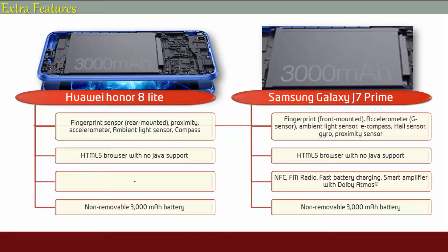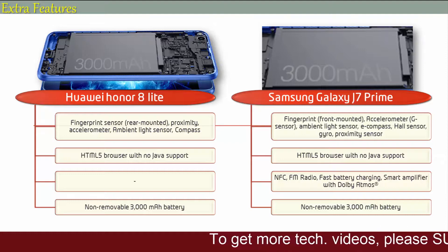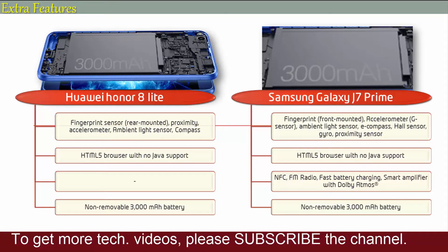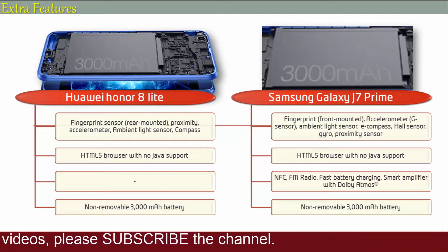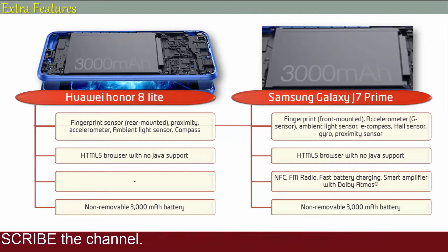Huawei has placed the fingerprint scanner on the rear side of the phone. It also has an ambient light sensor, proximity sensor, compass and accelerometer. This phone comes with a non-removable 3000 mAh battery. Whereas Nokia has placed the fingerprint scanner on the front side of the phone. The Nokia 6 also features NFC, FM radio, micro USB 2.0, USB OTG, fast battery charging, and a 3000 mAh battery as well.